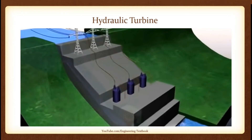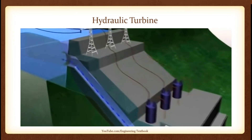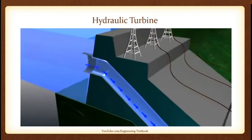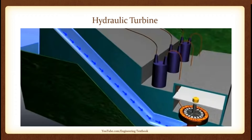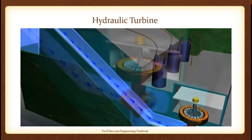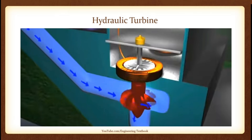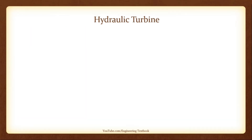Hydraulic turbines are used in hydroelectric power plants and have water as their working fluid. Millions of liters of water are collected in the dam — the greater the height of the dam, the more the pressure. This highly pressurized water is made to flow through a large pipe called a penstock. The turbine is located at the end of the penstock, where pressurized water strikes the blade at high velocity, making it rotate. This turbine is connected to a generator which generates electricity.